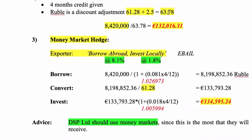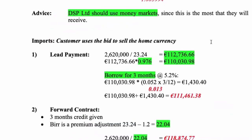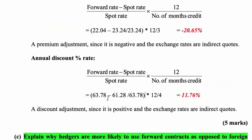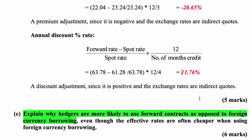For the ruble — there it is: 63.78 — and there's your spot. So it'll be your forward minus your spot, divided by your spot: 63.78 minus your spot, all divided by your spot. The number of months credit was four, and we have a discount adjustment which just happens to be a positive number because we're dealing with an indirect quotation — remember you added it on. That completes that question.